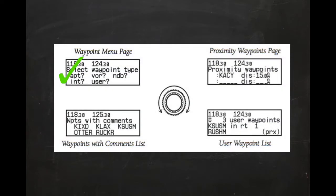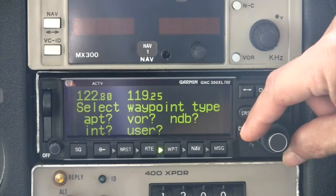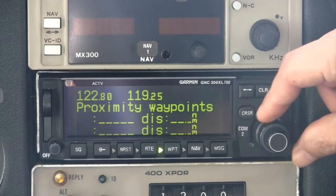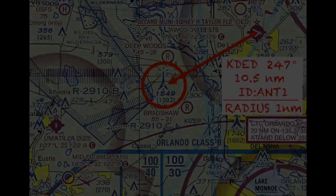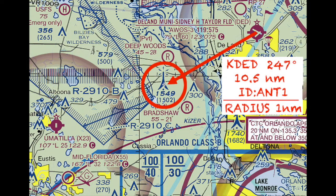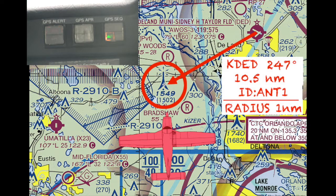Now that we've reviewed the main types of waypoints and their respective pages, let's take a brief look at the special proximity waypoint, which is found on the second page of the waypoint group. A proximity waypoint creates an alarm circle of a specified radius up to 99 nautical miles from any existing waypoint within the GNC 300 XL database, including user-defined waypoints. Up to nine proximity waypoints can be created. A proximity waypoint is a great way to create message alerts around obstructions or other items of concern along your route of flight.